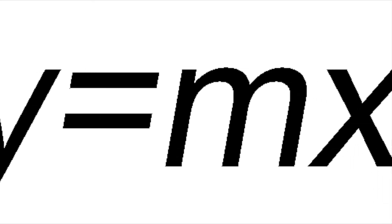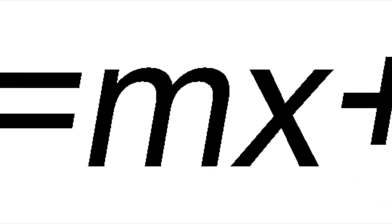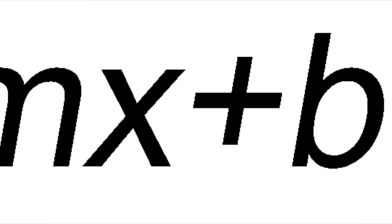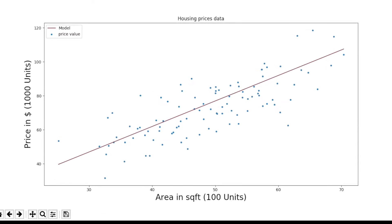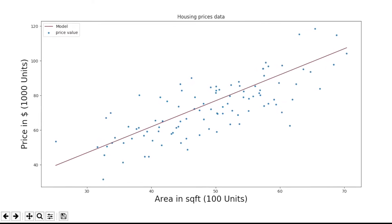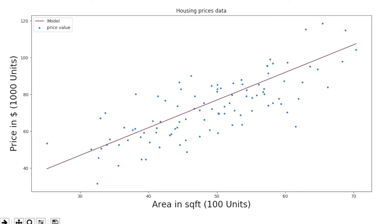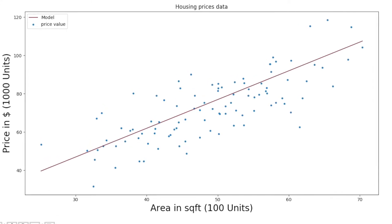We all know that the equation of a line is y = mx + b, where m is the slope and b is the y-intercept, or the point where the line meets the y-axis. So when I say there is a line that best fits the data points, it means there is some value for m and b using which you can build the best fit line. The objective becomes: how to find the best values for m and b.